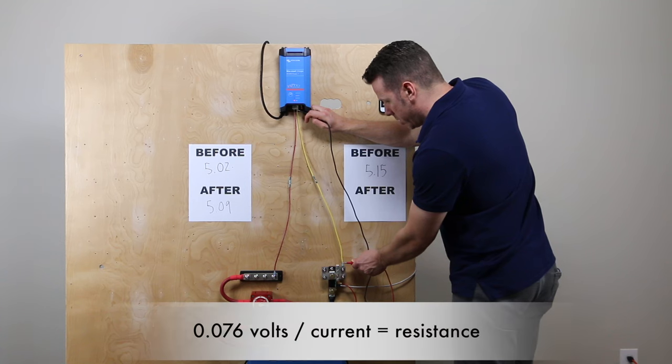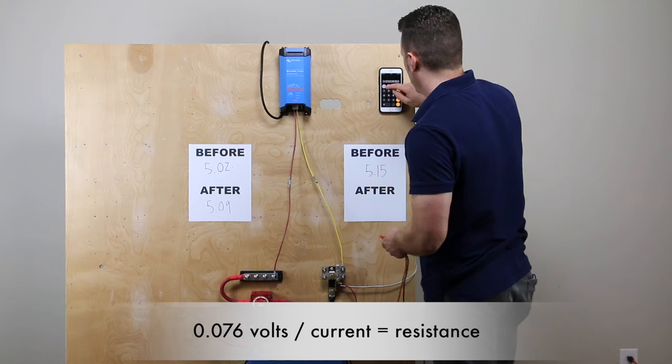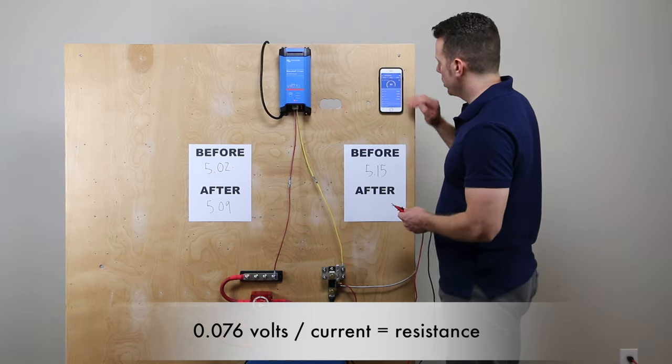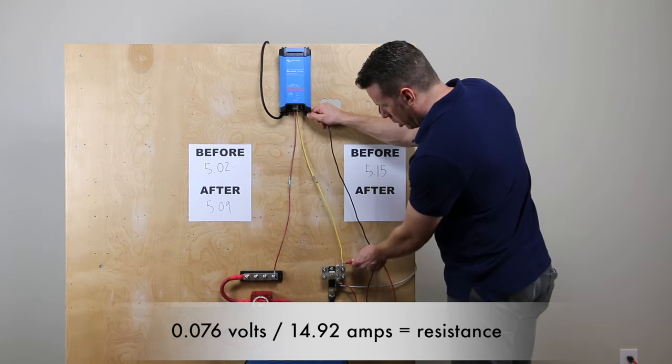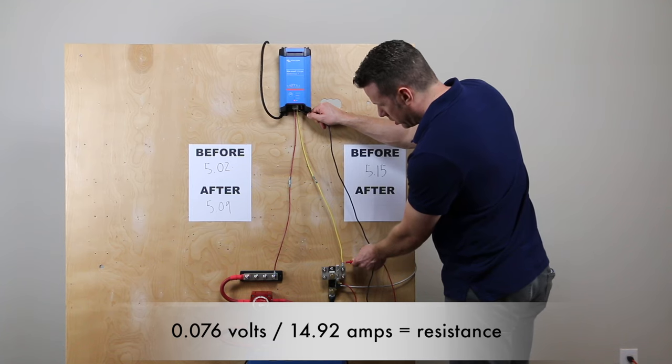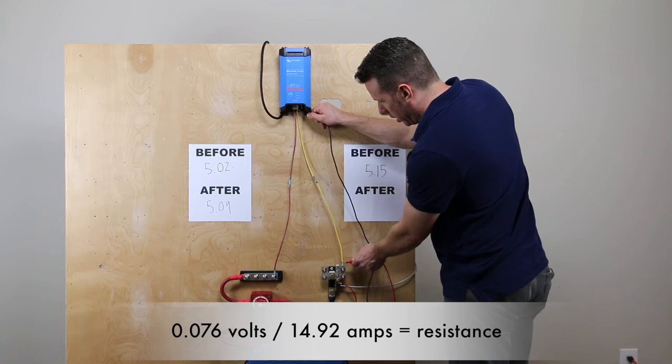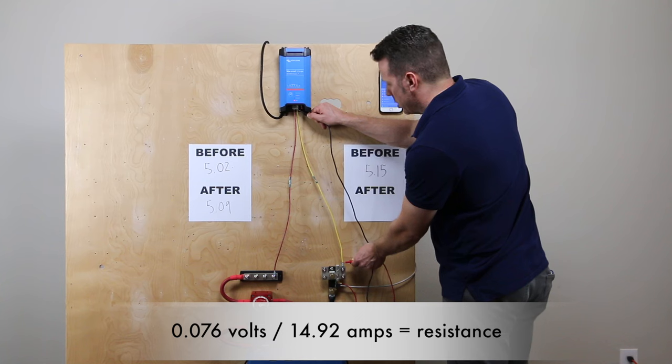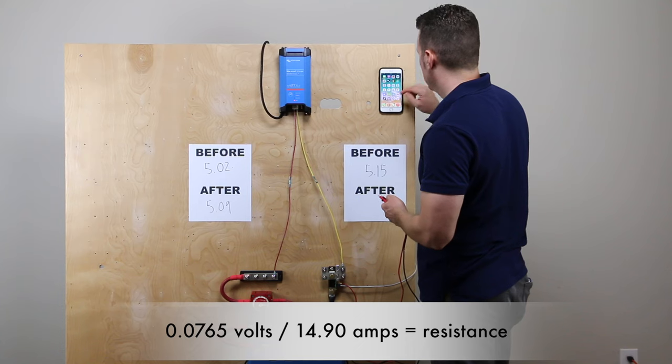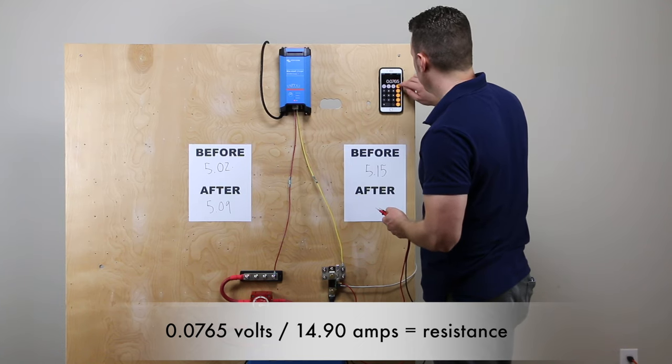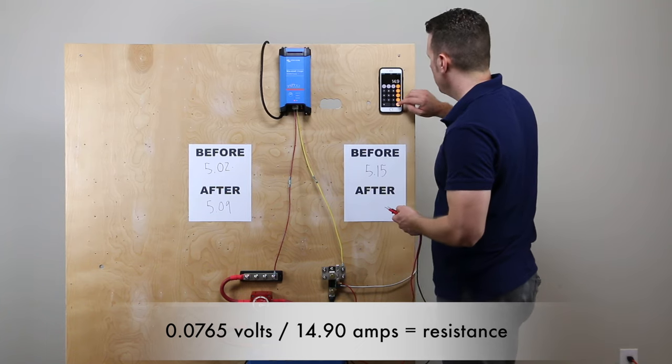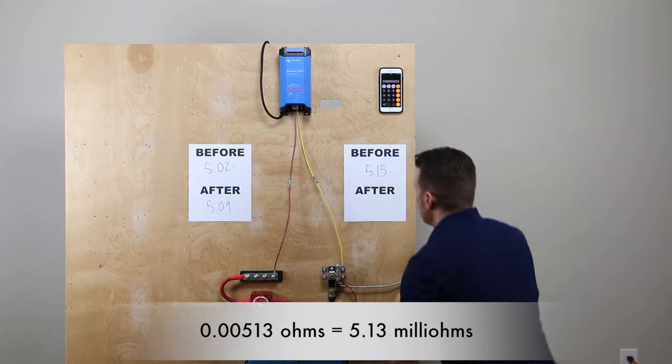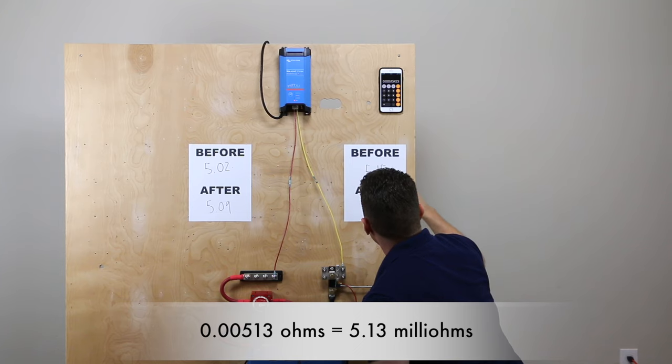Voltage drop is 0.076, same deal, and let's grab our current real quick. Our current running through there at this exact moment, 14.92. 0.0776. I'm going to let it stabilize. At this point, it's vacillating between them, so we'll do 0.0765 divided by 14.9. 0.0765 divided by 14.9 amps, 5.13 milliohms.